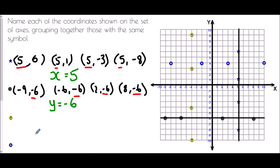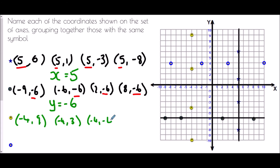For the smiley faces, naming each coordinate: (-4, 9), then (-4, 3), then (-4, -4), and finally (-4, -10). What do they all have in common? The x coordinate is always negative four. So we can say x equals negative four — they always share that same value, forming a straight line through x equals negative four.